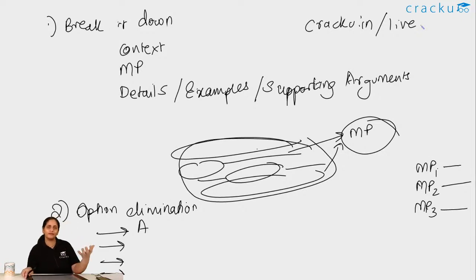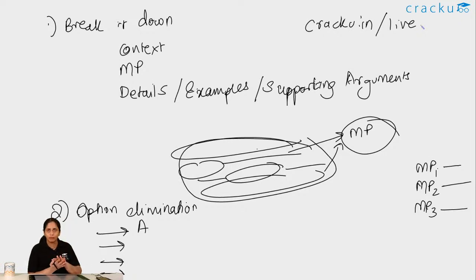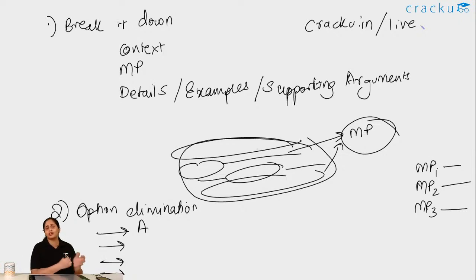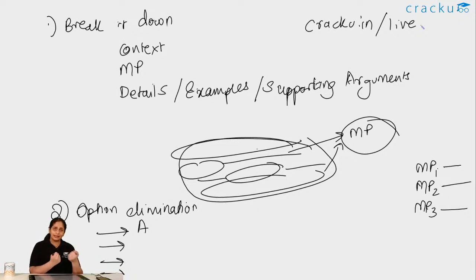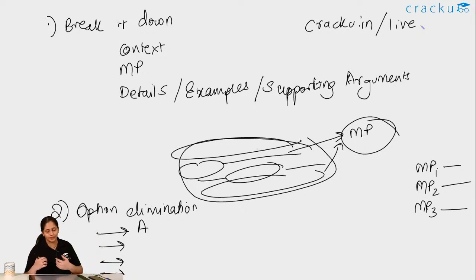Those who come first, second, and third in the test will win a T-shirt from Cracku, and we will also give you the combo package which is the daily target plus mocks. Our mocks are the closest to actual CAT — we have thought about the right difficulty level and the right mix of questions. So please join the test and try to take the win so that you can get the mock plus daily target package.